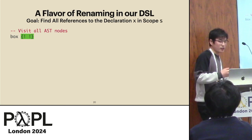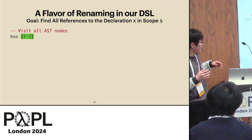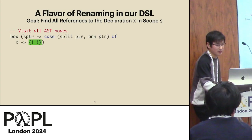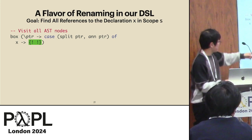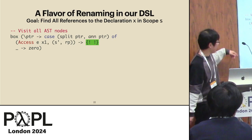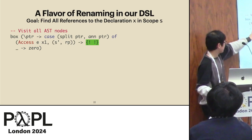Now let me illustrate how our DSL supports transformation and querying name-binding information. Consider how to express a renaming transformation in our DSL. We start by using a generic traversal operator to visit all the AST nodes. This operator is parameterized by a function whose argument is a pointer to an annotated AST node — a function that, given such a pointer, returns the annotation of the AST node. We then pattern match on the AST node: if it's a field access node, we may want to rename it; if not, we do nothing — zero means do nothing.